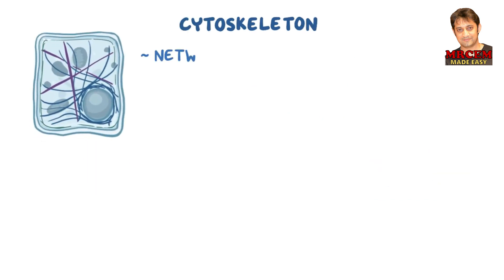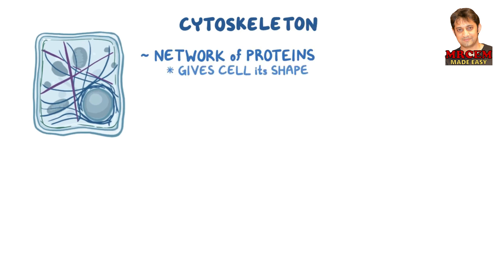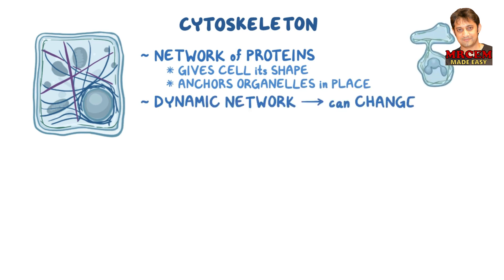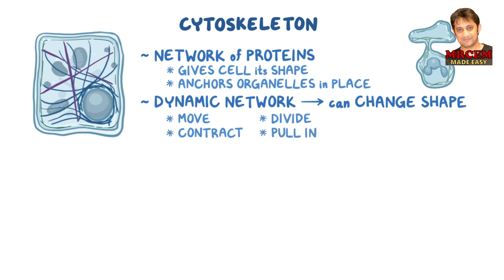First things first: the cytoskeleton is a network of proteins within the cell that gives each cell its shape, and it anchors organelles in place. But it's also a dynamic network which can change shape when the cell wants to move, contract, divide, or pull in or push out molecules.